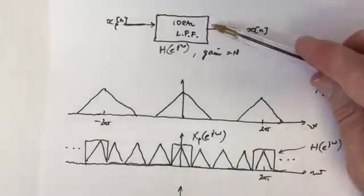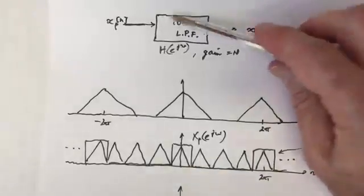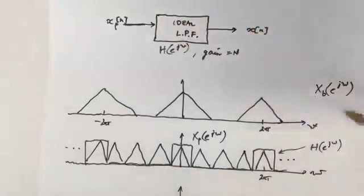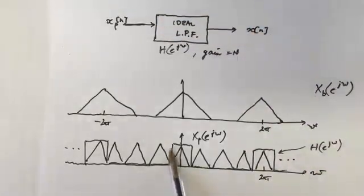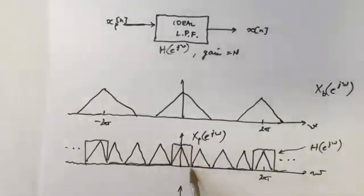So we convolve with a filter that has an impulse response, where the Fourier transform is this ideal square, because it ideally keeps all of these low-pass and sets all of these others to zero, multiplying in the frequency domain and convolving in the time domain.